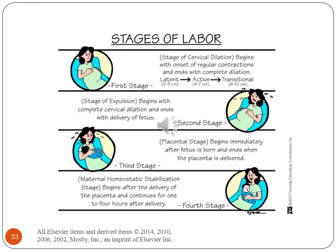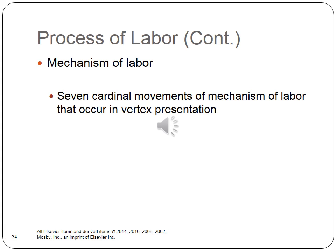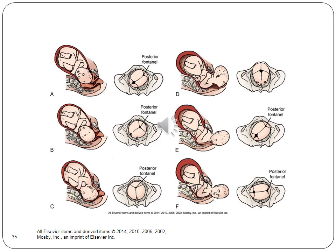This is a picture depicting the stages of labor. Mechanisms of labor: there are seven cardinal movements that occur in vertex presentation — engagement, descent, flexion, internal rotation, extension, restitution and external rotation, and expulsion, which is the birth. In the diagram: A is engagement and descent; B is flexion; C is internal rotation to occiput anterior position; D is extension; E is external rotation beginning; F is external rotation. This is on page 352 of your text.